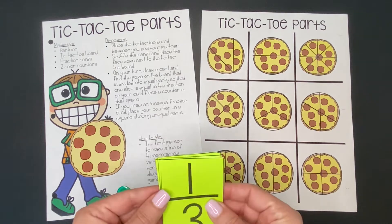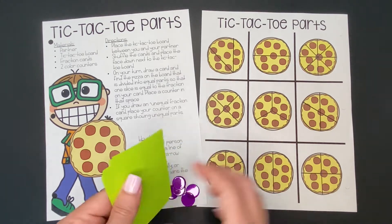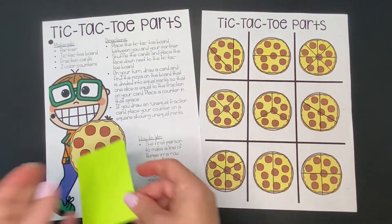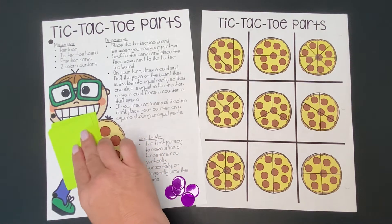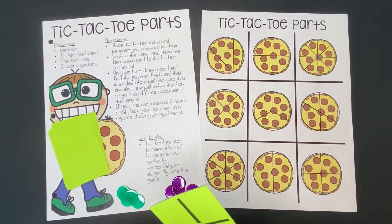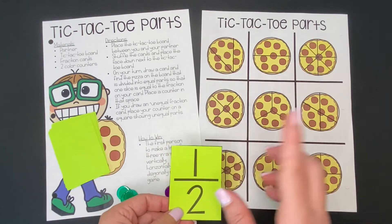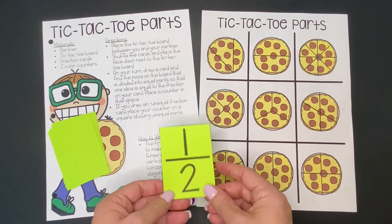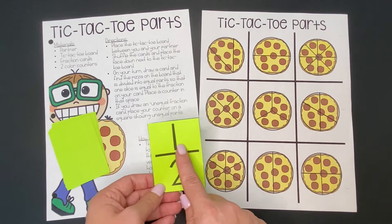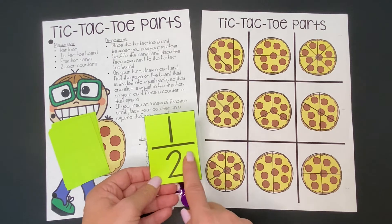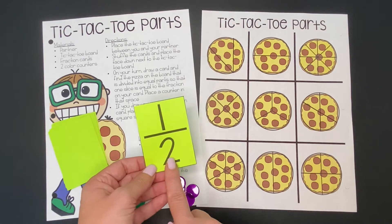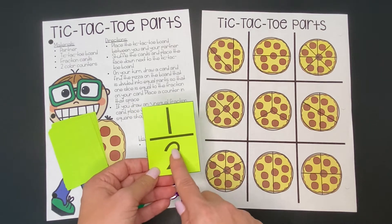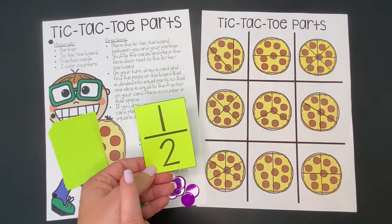On your turn, first you'll shuffle up the cards and place them between you and your partner. Then you're going to draw a card and find the pizza on the board that's divided into equal parts so that each part — like one slice of the pizza — would be equal to your fraction. So I'm looking for my fraction, which is one half. I'm looking for a pizza that's divided into two equal parts, and this fraction one half would represent one slice of that pizza.